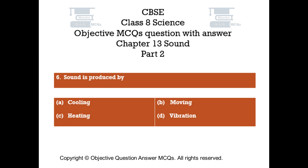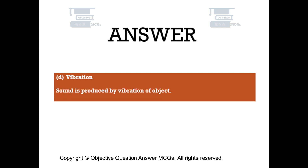Question number 6. Sound is produced by. Option A: Cooling. Option B: Moving. Option C: Heating. Option D: Vibration. The right answer is option D — Vibration. Sound is produced by vibration of an object.